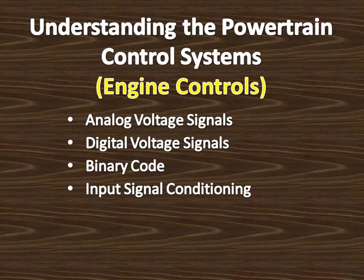Because many input sensors produce analog voltage signals and the microprocessor in the computer operates on digital signals, something must change these analog signals to digital signals. This job is performed by the input amplification and signal conversion chip in the computer, which may also be called an analog-to-digital converter. This chip continually scans the input sensor signals, assigns numeric values to the signal voltages, and then translates the numeric values to binary code.